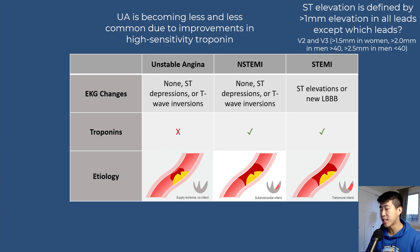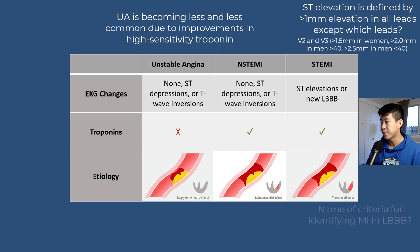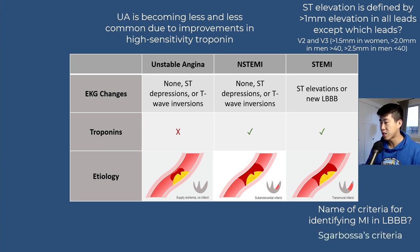For ST elevation, you need to see ST elevations in at least two contiguous leads. The criteria for identifying MI if somebody has a new left bundle branch block is called the SCARBOSAS criteria, which the ED uses to stratify whether someone is having an MI.